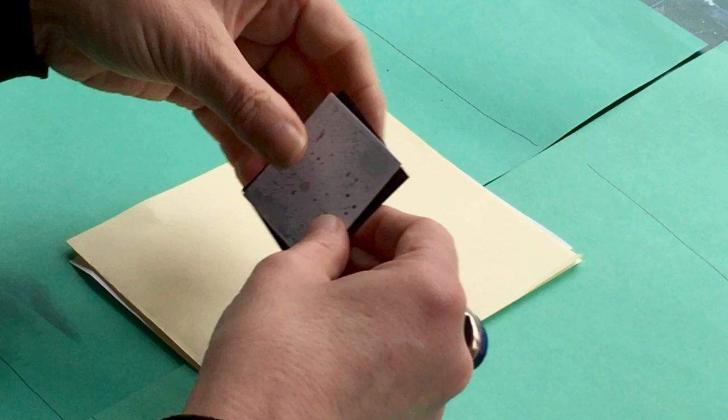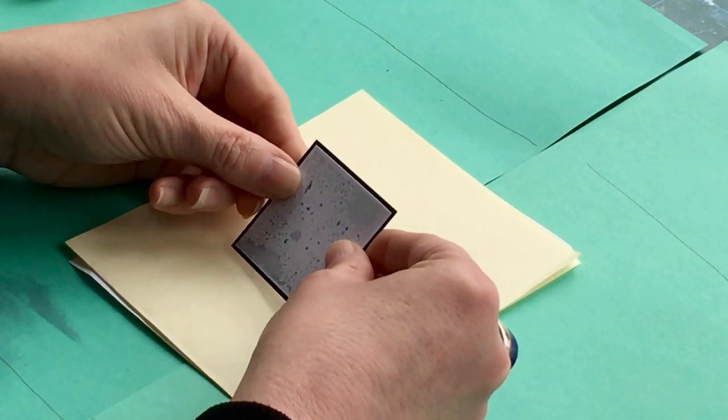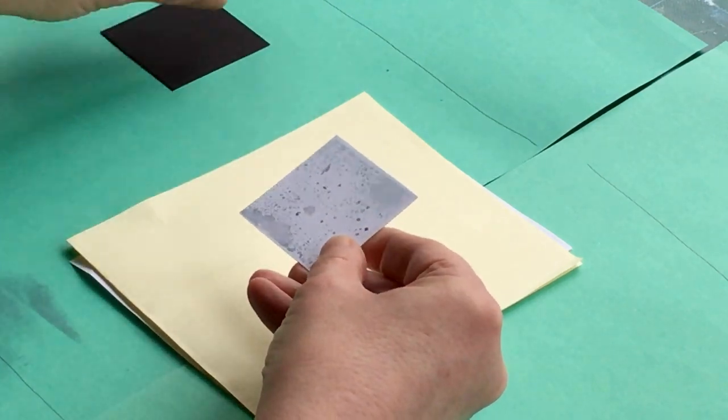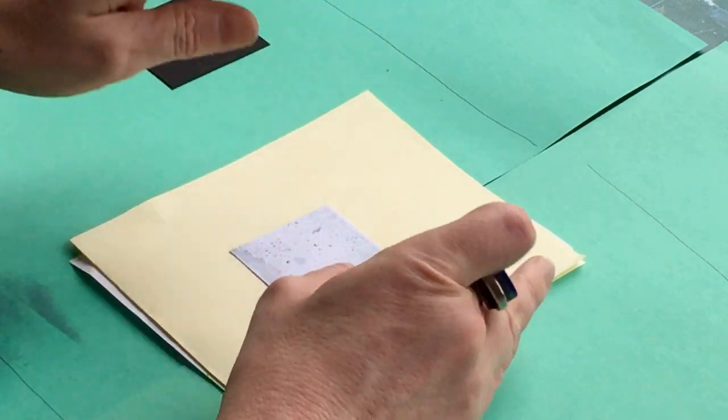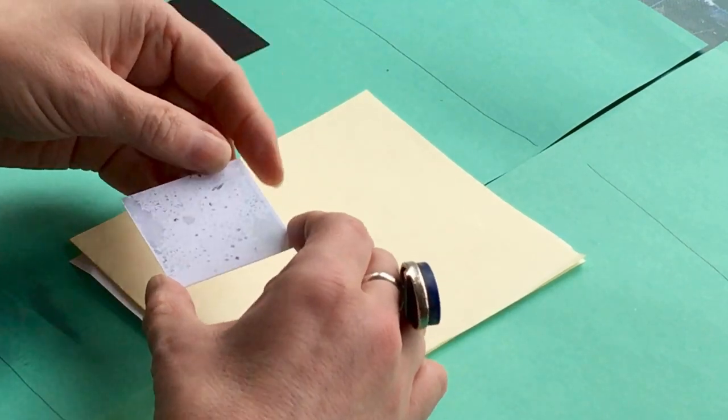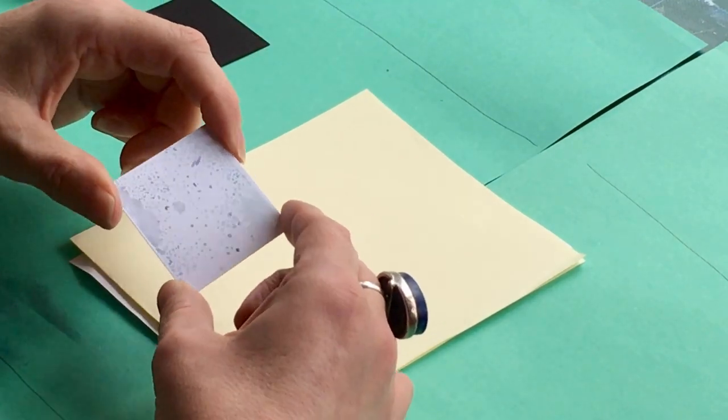This background has been made with distress ink in Speckled Egg and Weathered Wood, with a little bit of Pixie Powder Cosmic Shimmer in Pewter for a little bit of added bling.